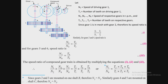Since N2 = N3, meaning the speed of gear 2 equals the speed of gear 3 because they are on the same shaft — for example if gear 2 is at 100 RPM, the shaft and gear 3 are also at 100 RPM — these terms cancel. Similarly, N4 and N5 are mounted on the same shaft C, so N4 = N5 and those terms also cancel.